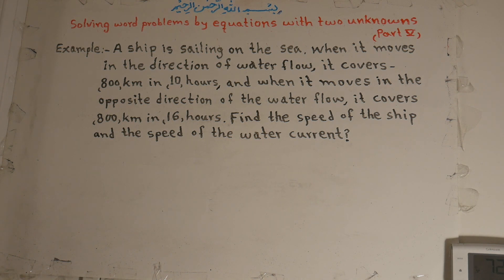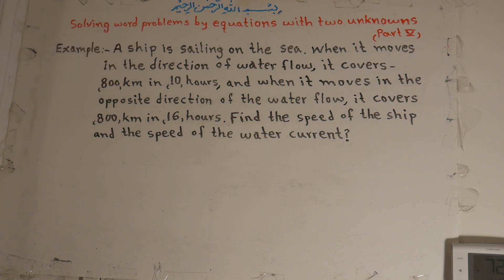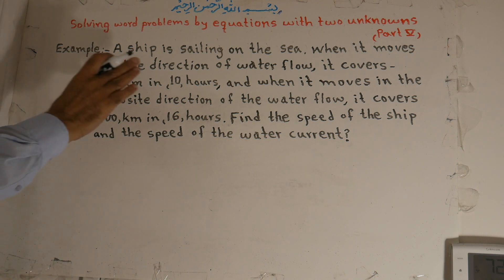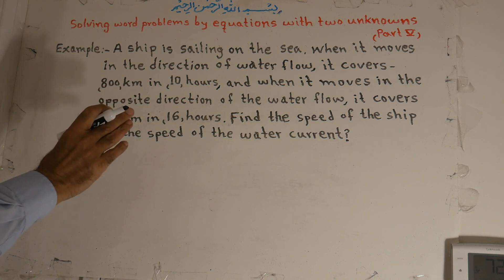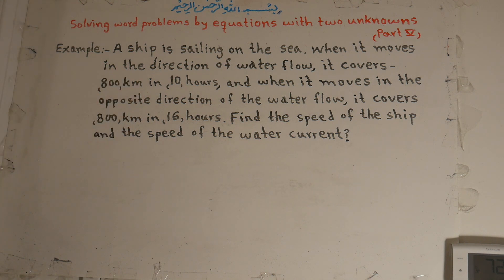Welcome to my class. Our topic is solving word problems by equations with two unknowns, part five. A ship is sailing on the sea. When it moves in the direction of water flow, it covers 800 kilometers in 10 hours. When it moves in the opposite direction of the water flow, it covers 800 kilometers in 16 hours. Find the speed of the ship and the speed of the water current.